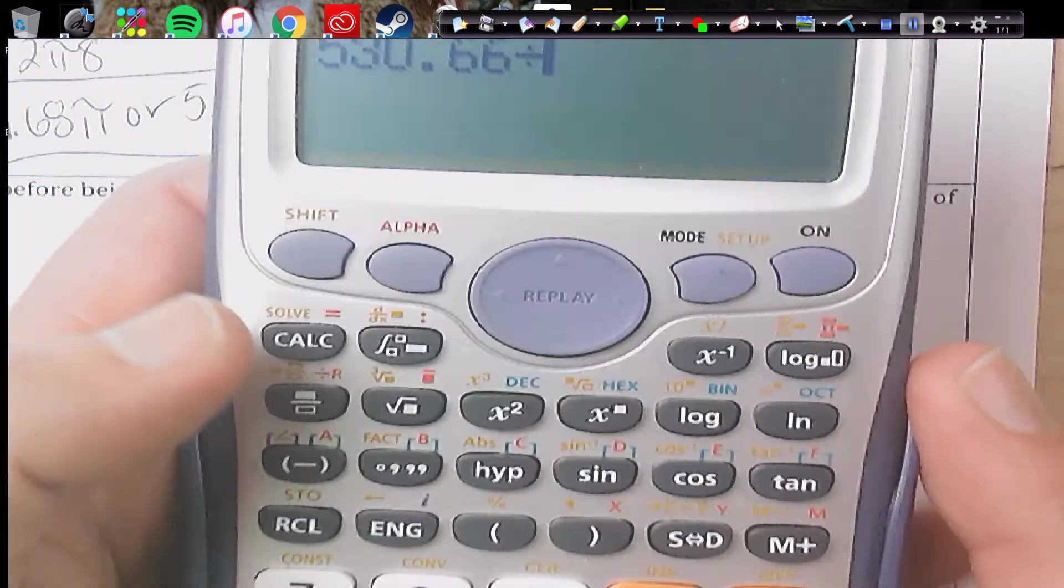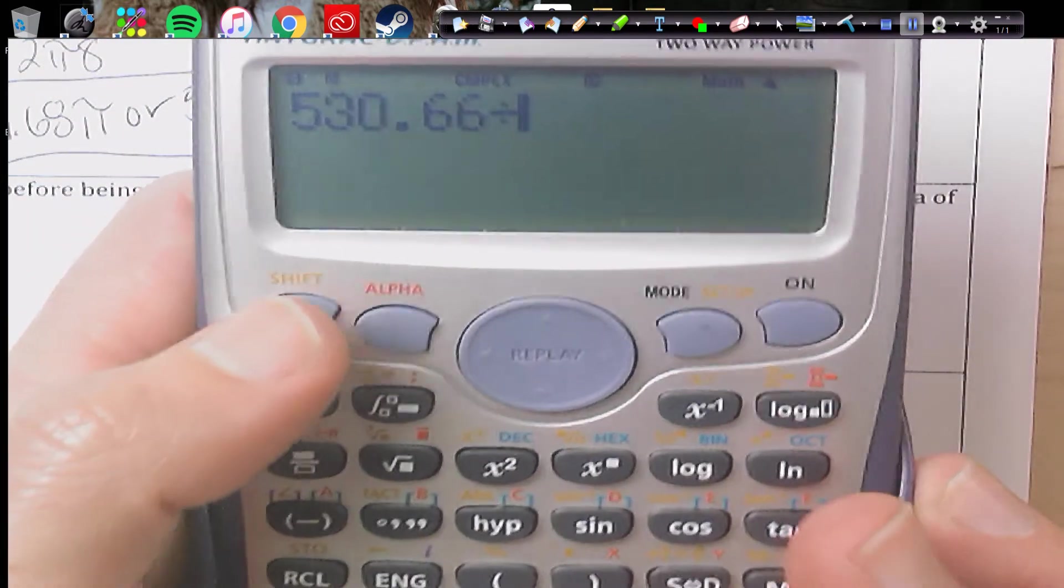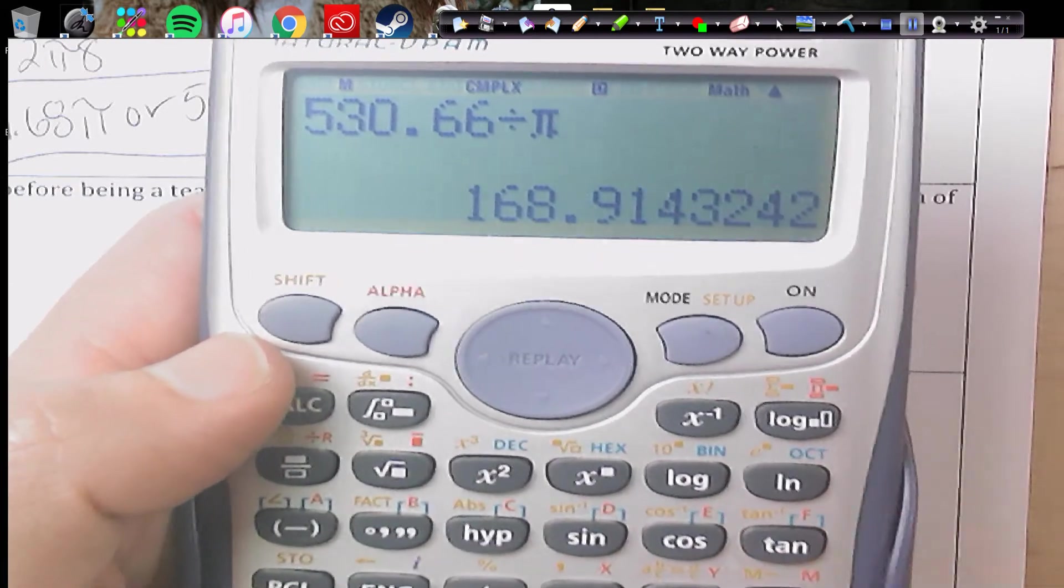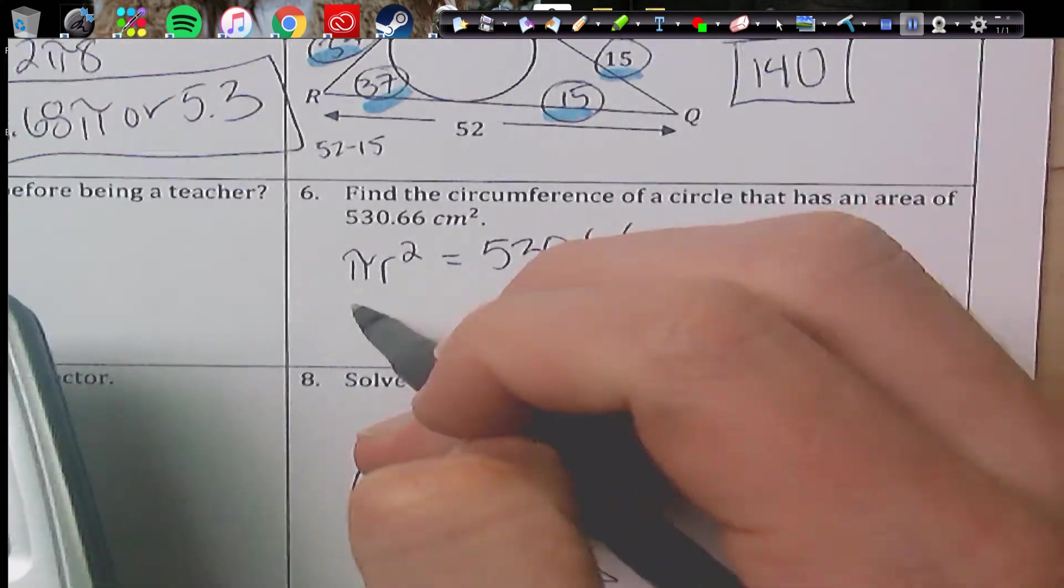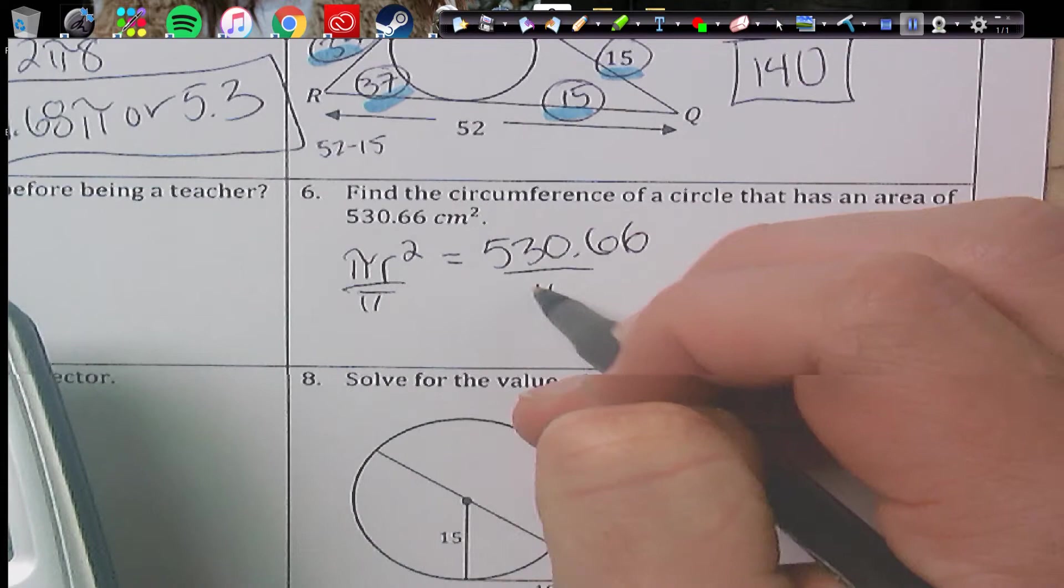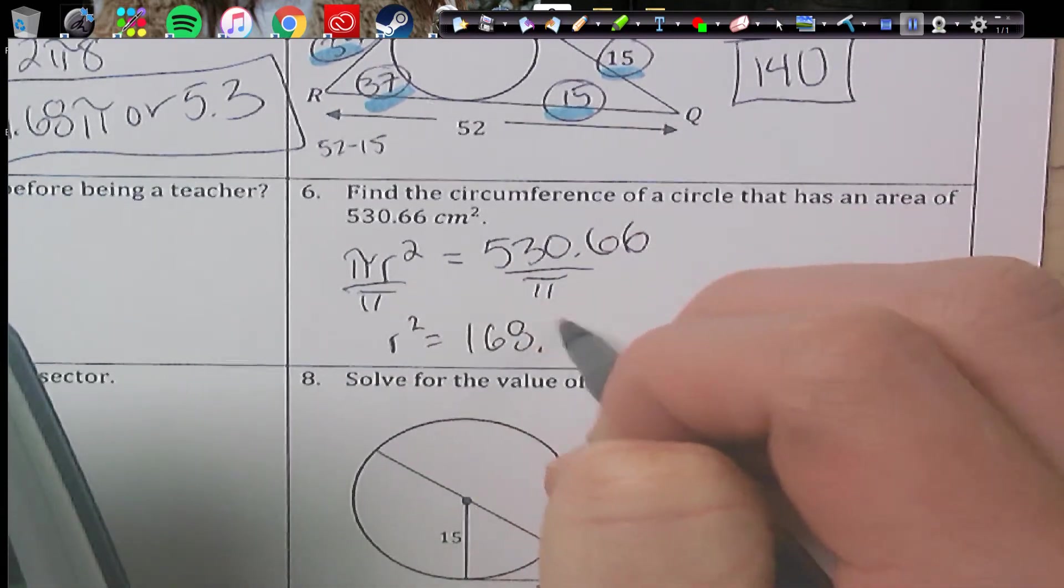We're going to divide that number by π first. So we divide it by π. We get this number. So divide by π.